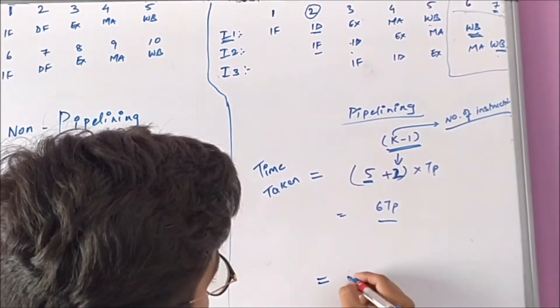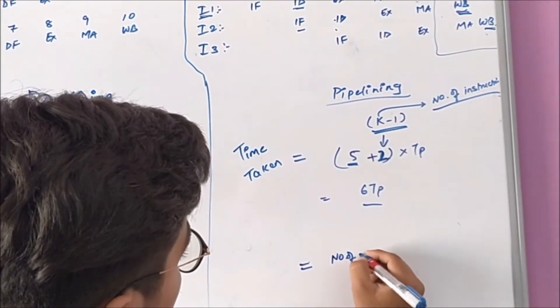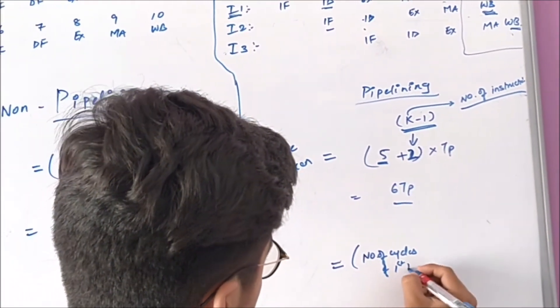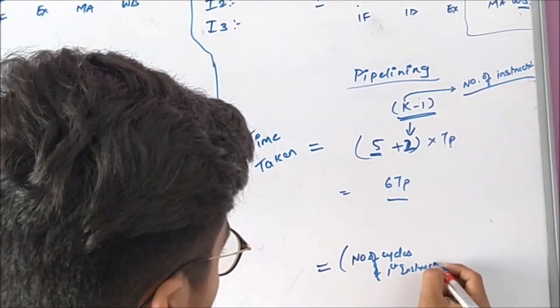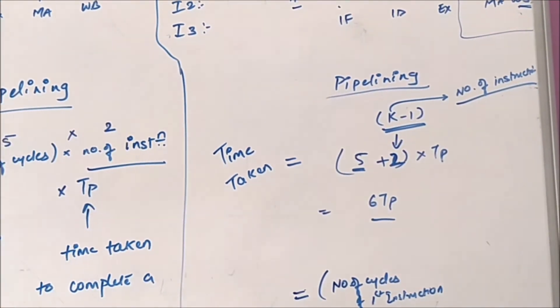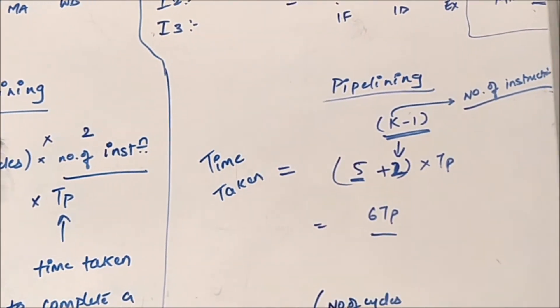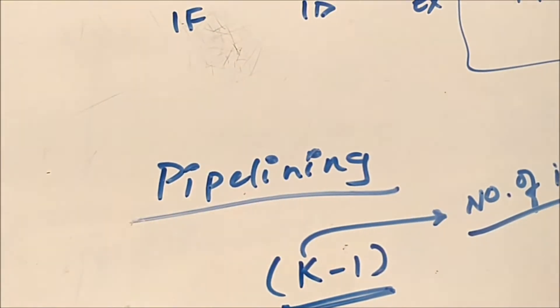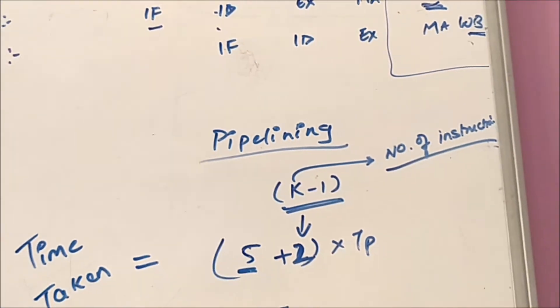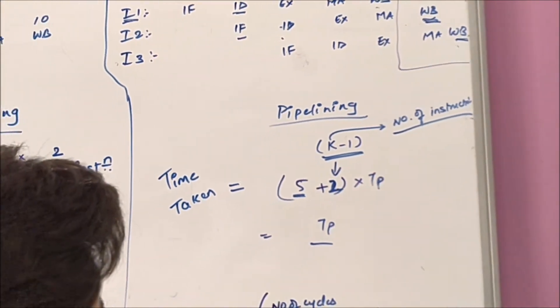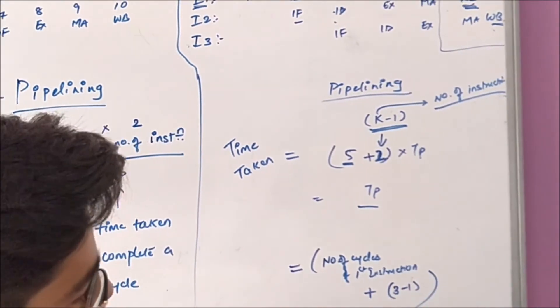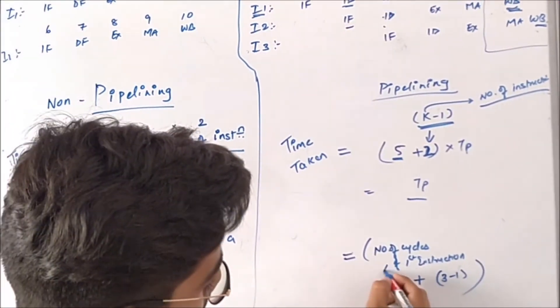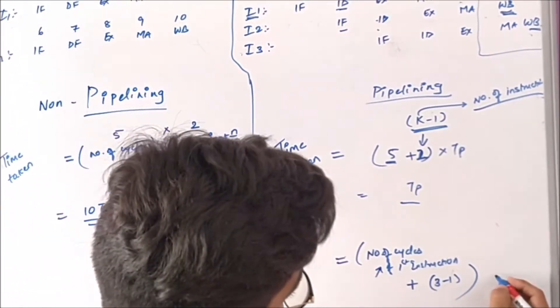In general, if you write, it is number of cycles of first instruction plus number of instructions minus one. That is, three minus one. Why we are subtracting one from this? Because the number of cycles we have completed in the first instruction, into TP.